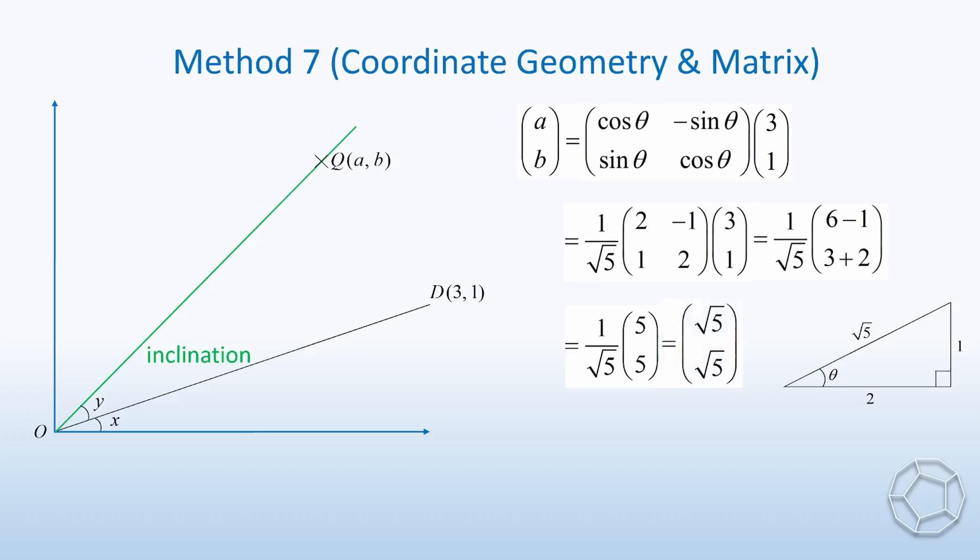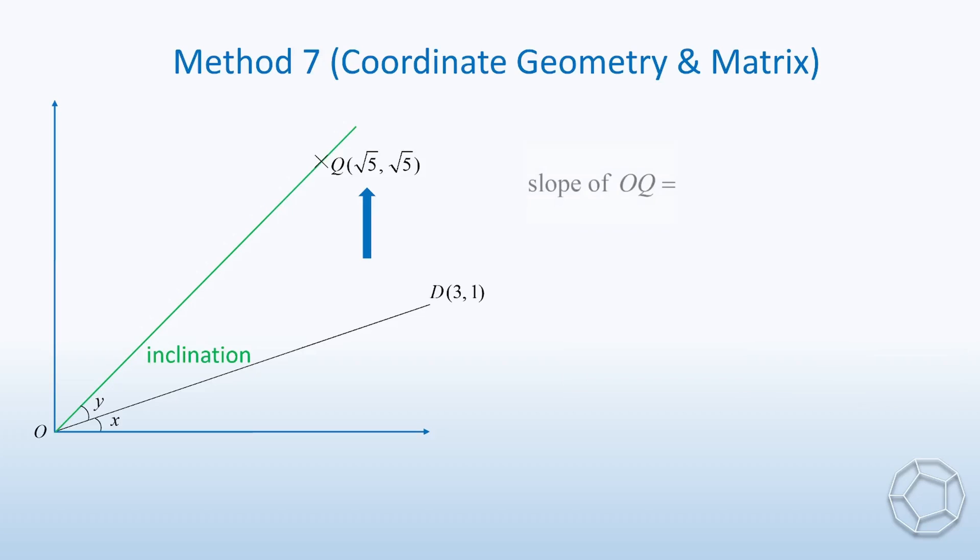Great! Let's figure out the slope of OQ, which is equal to square root 5 minus 0 over square root 5 minus 0, which is equal to 1. In other words, the inclination of OQ is equal to arctangent 1, which is 45 degrees. Again, we get the desired result, x plus y is equal to 45 degrees.